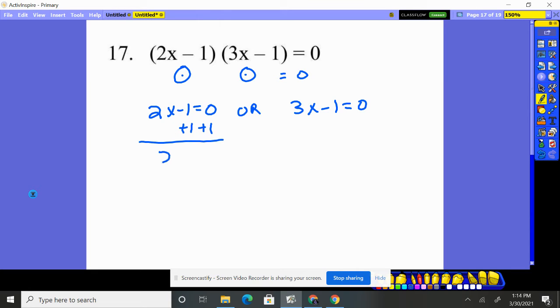I add 1 to both sides, 2x would have to equal 1, divide by 2. x would have to be 1 half, because 2 times 1 half is 1, and 1 minus 1 is 0, and 0 times whatever you get there is going to give you 0.